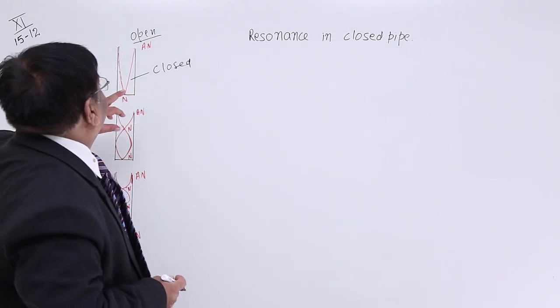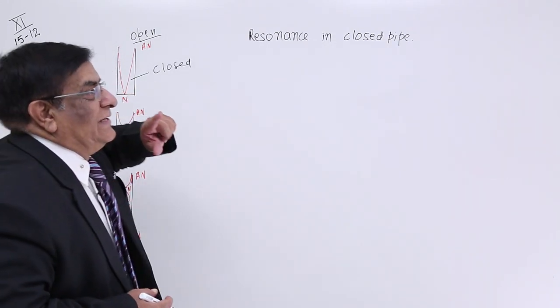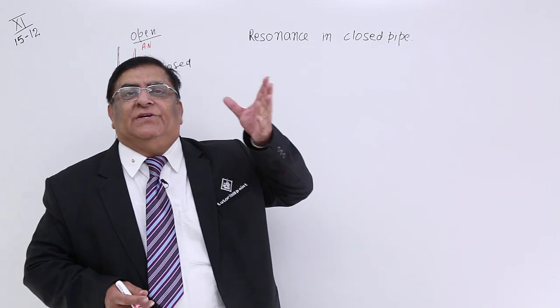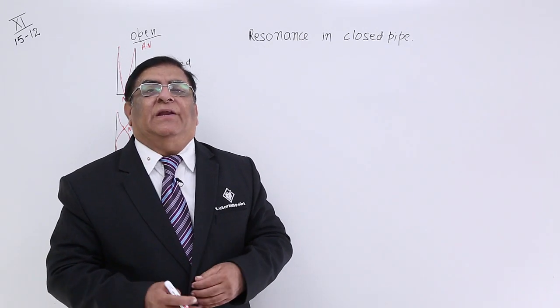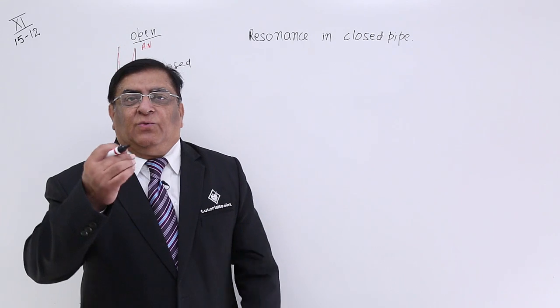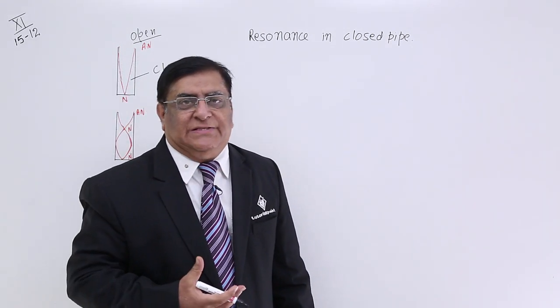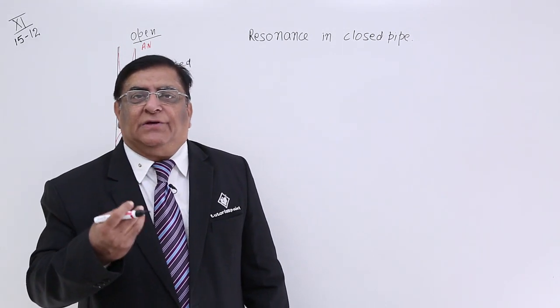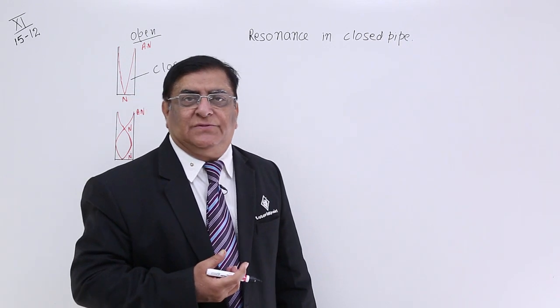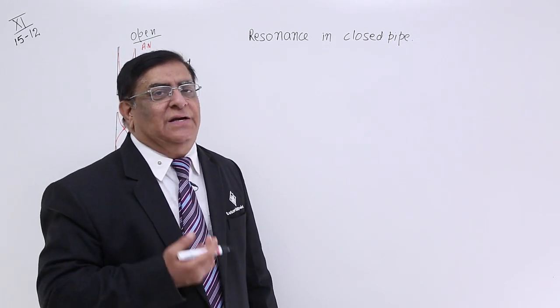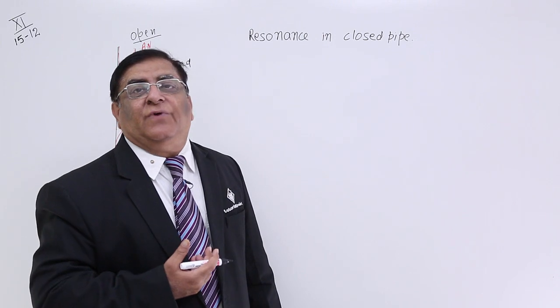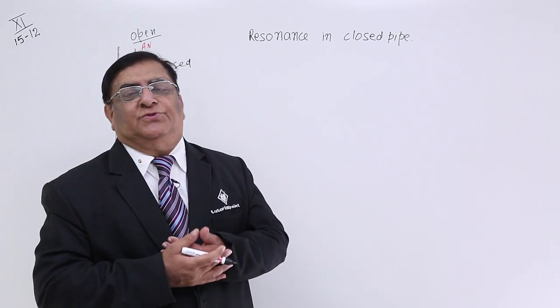That is the sound which is coming from the organ instruments. So we again listen a combination of many frequencies. How these many frequencies are formed and what is the relation between those frequencies that we observe by making these diagrams. How resonance can take place there and how stationary waves are formed in the closed pipes.